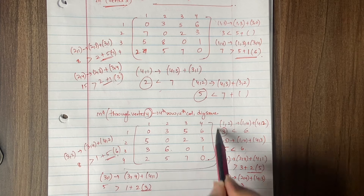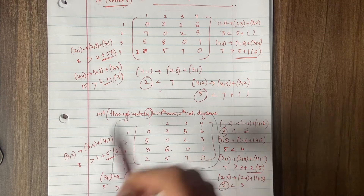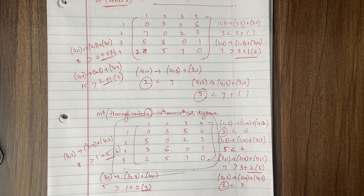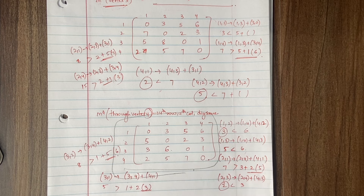This is your final matrix M4 — the final matrix through all the vertices. M1 done, M2 done, M3 done, and finally M4. By covering all the vertices we have arrived at this final result.